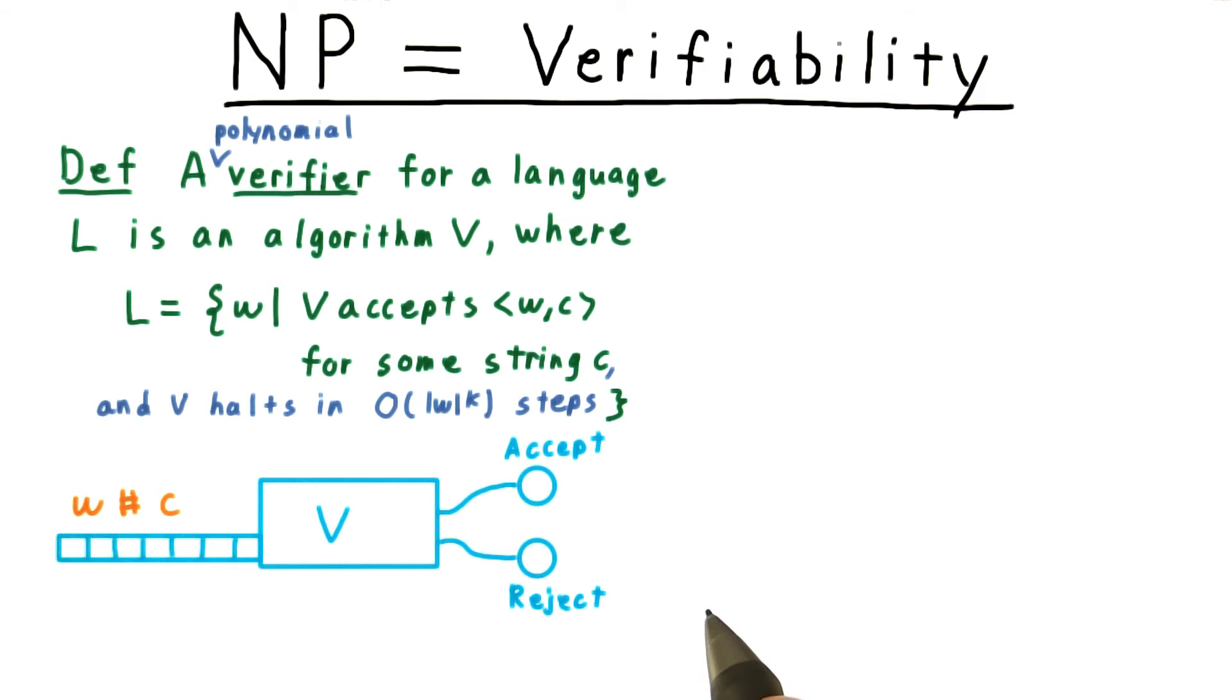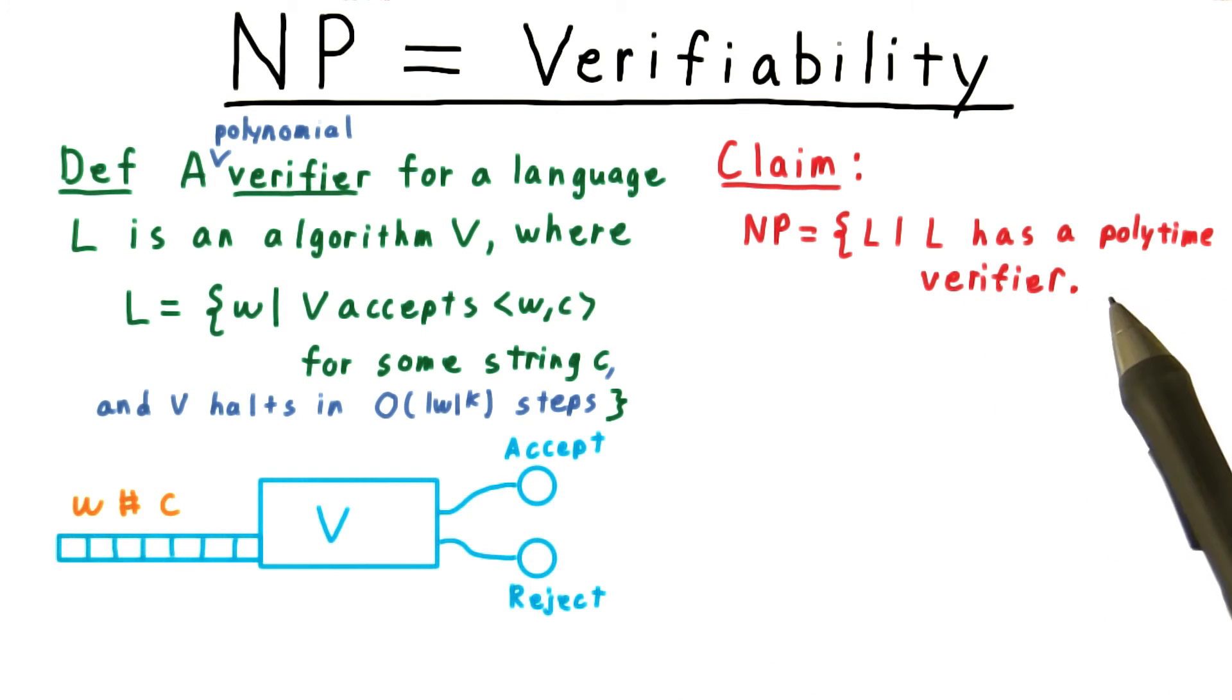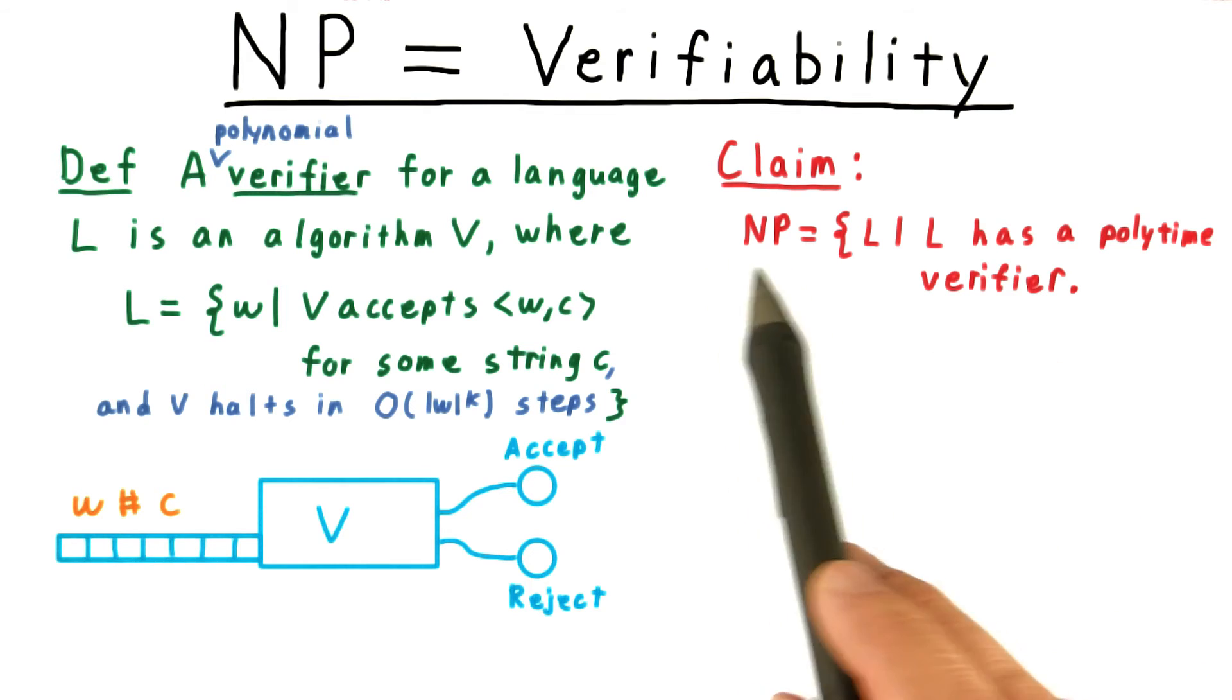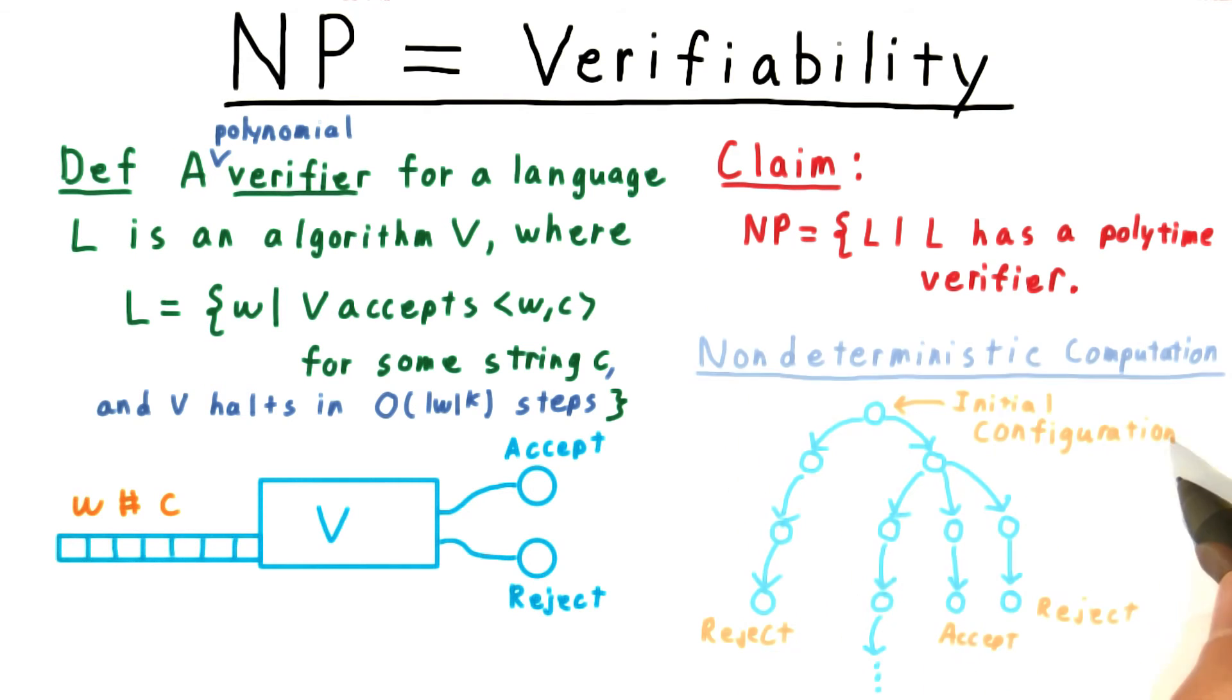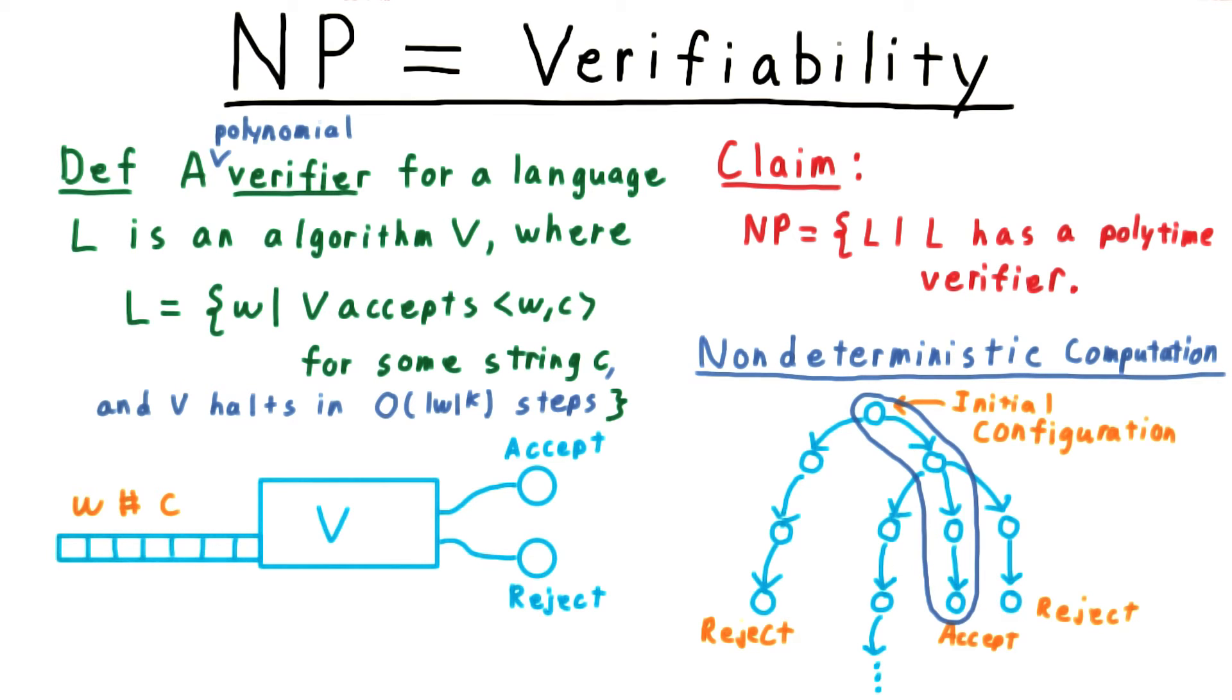So that's a polynomial verifier. And we claim that the set of languages that have polynomial time verifiers is the same as NP. The key to understanding this connection is once again this picture of the tree of computation performed by the non-deterministic machine. If a language is in NP, then there's some non-deterministic machine that recognizes it, meaning that for every string in the language, there's an accepting computation path.